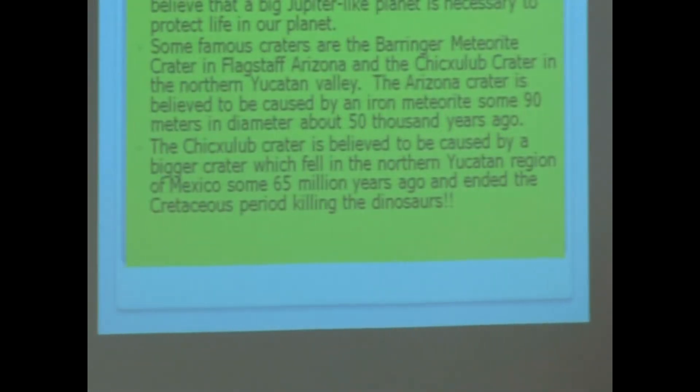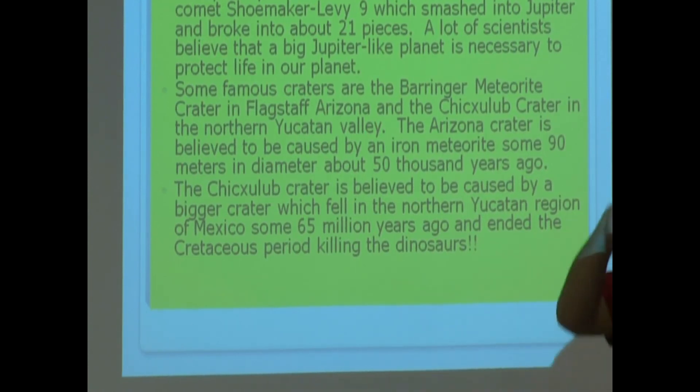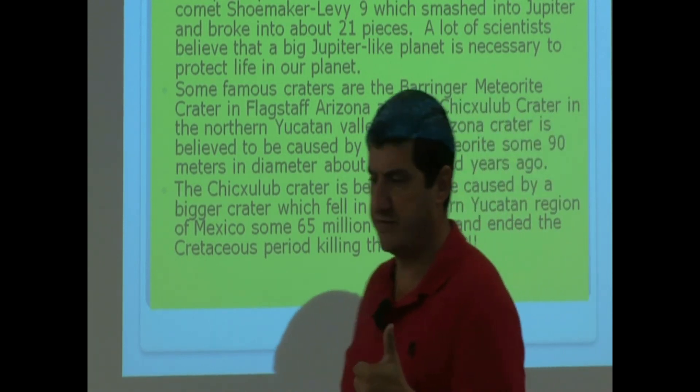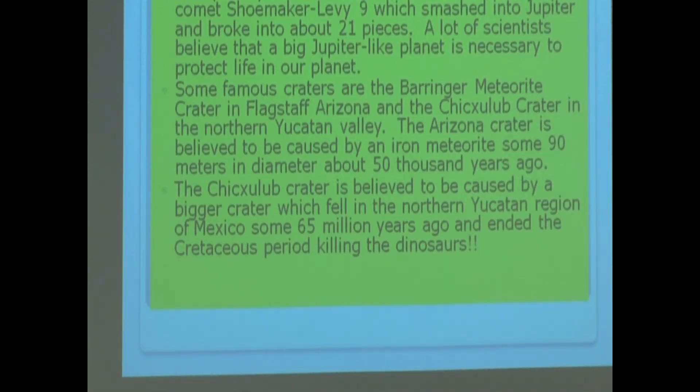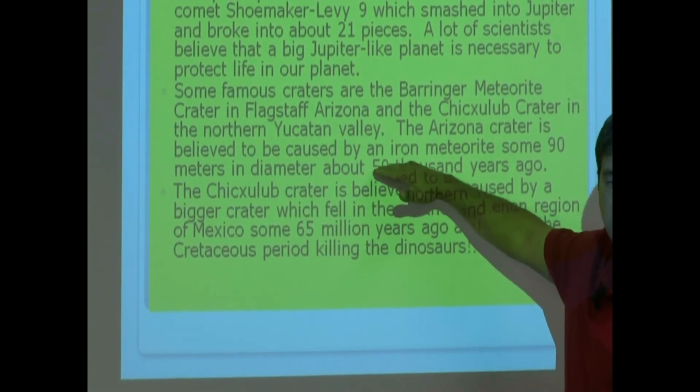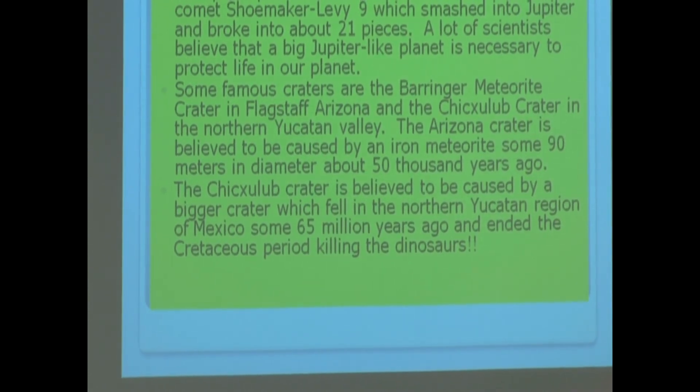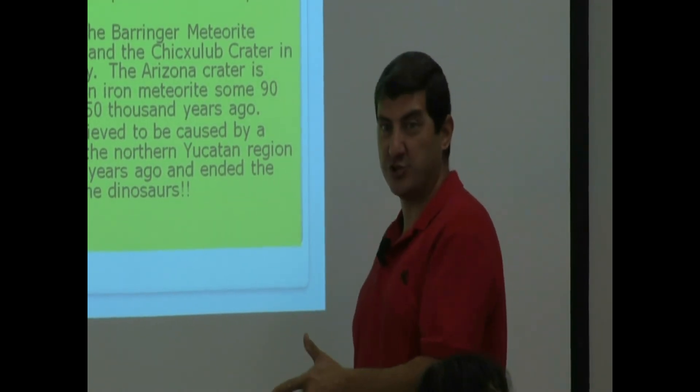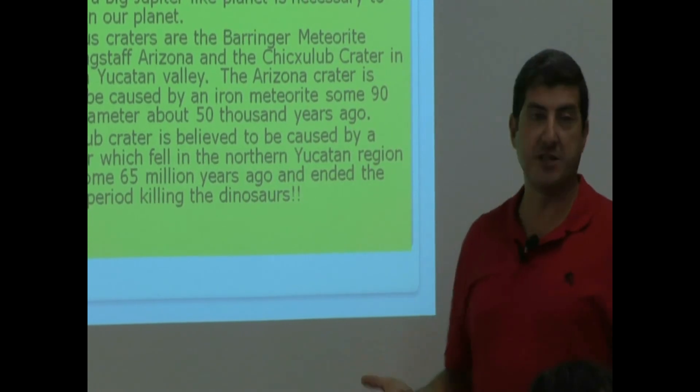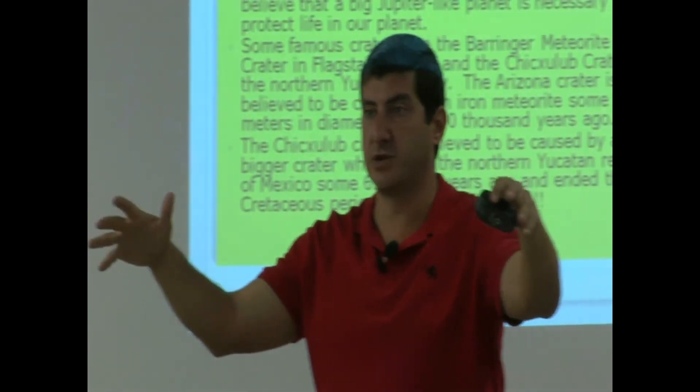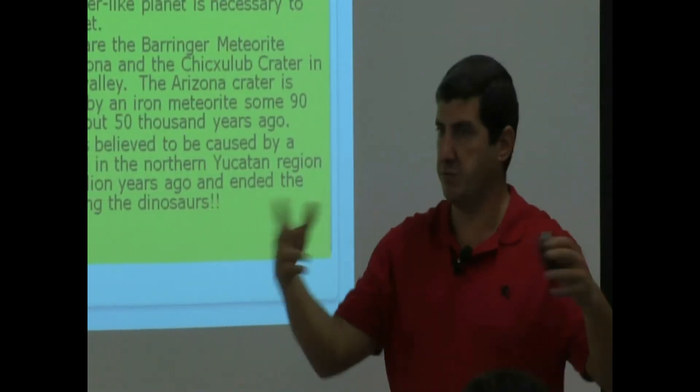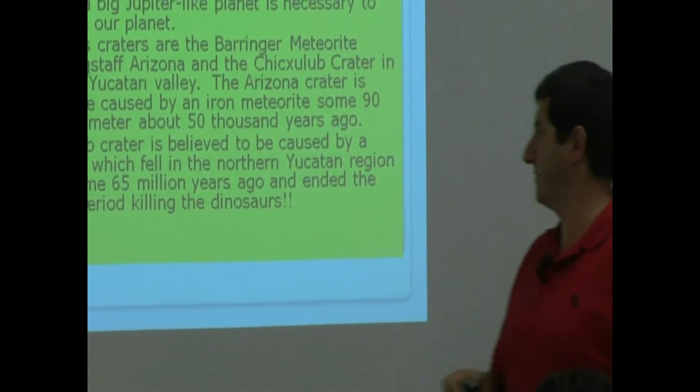However, the Chicxulub crater is believed to be caused by a bigger meteorite that fell in the northern Yucatan region of Mexico, in where Cancun is, kind of in that area. Some 65 million years ago, much, much longer, much before than this one. This is 50,000 years ago. This is 65 million years ago. And this one is the one that we believed ended the dinosaur age. It killed the dinosaurs and ended the Cretaceous period. Because it was such a big collision that all this dust filled the air, covered the sunshine, became very poisonous, and for many, many, many years after that, life became unbearable, so the dinosaurs died off from that collision.